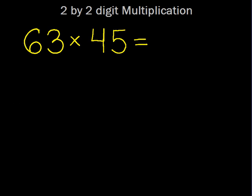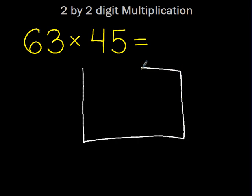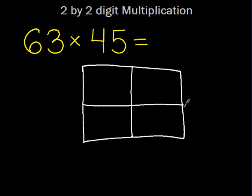Today we are multiplying two-digit by two-digit numbers, and we have 63 times 45. What is the first thing we need to do using one of our strategies to solve this problem? I need to draw a window. It's also called an open array, because an array is like when we line up objects to represent multiplication. So we have our window.